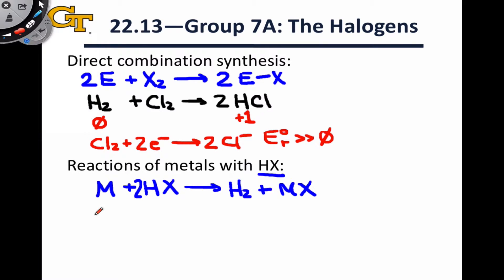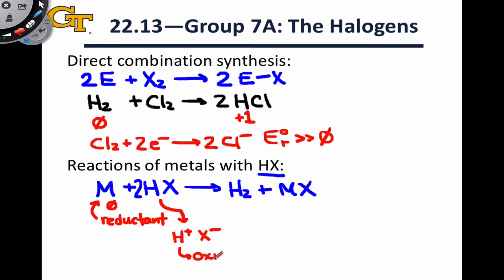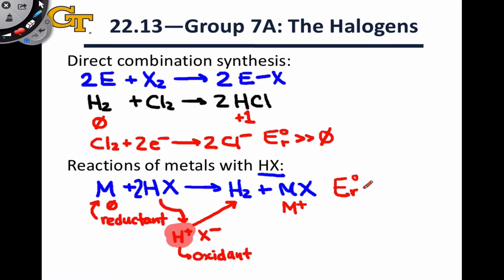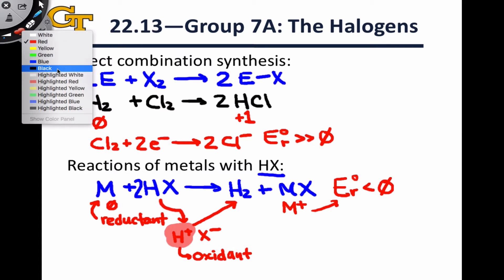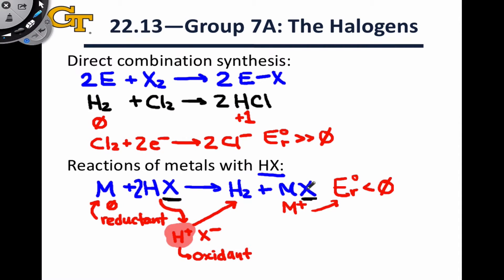The basic idea here is again a redox process where we think of the metal in the zero oxidation state as a reducing agent. We can think of HX as H⁺ and X⁻, where the H⁺ acts as an oxidizing agent. The oxidation state of H goes from +1 in the reactants to 0 in the products. For this reaction to go forward, the reduction potential of the cation M⁺ in the product salt needs to be less than zero. Notably, the halide anion acts as a spectator throughout, remaining essentially X⁻ on both the reactant and product side.